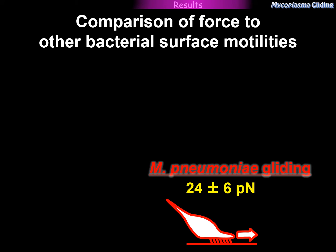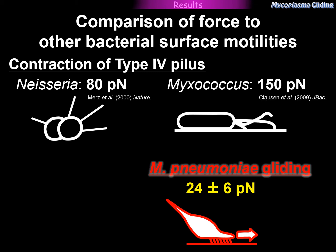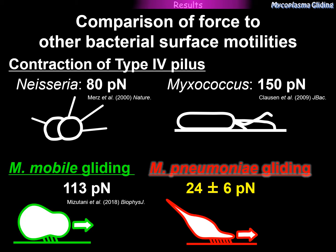We compared this to other known bacterial surface motilities. The contraction force of type IV pilus was previously measured by optical tweezers, and the values are about 80 piconewtons in some species and about 150 piconewtons in Myxococcus. Previously, we also measured the force of Mycoplasma mobile gliding — which, importantly, has no homology to pneumoniae gliding — and found a force of 113 piconewtons. Compared to these, the gliding force of pneumoniae was much smaller. One reason pneumoniae can glide with such a small force may be its streamlined cell shape, which reduces friction from liquid flow.